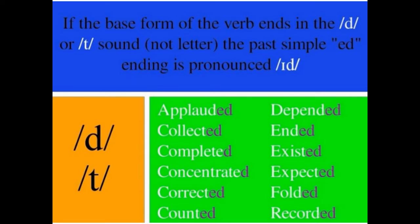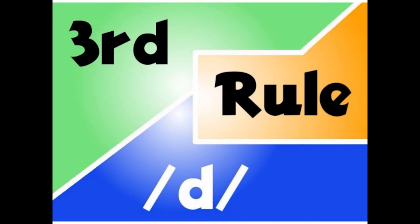The second rule: if the base form of the verb ends in a /d/ or /t/ sound — not the letter, this sound — the past simple "-ed" ending is pronounced like "-id". For example: "applaud" in the present, "applauded" in the past. Other examples: collected, completed, concentrated, corrected, counted, depended, ended, existed, expected, folded, and recorded.